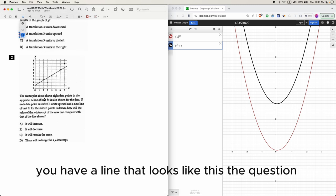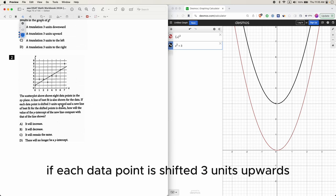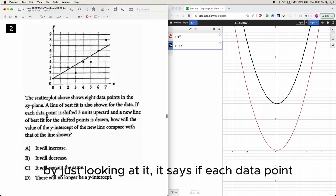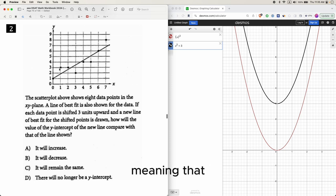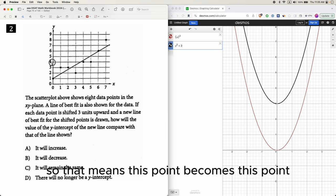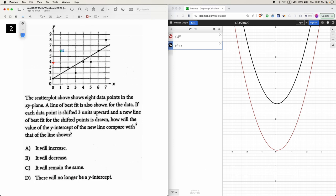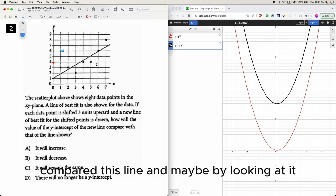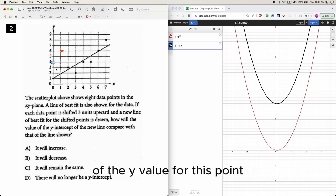You have a line that looks like this. The question says, if each data point is shifted three units upwards. So this one you can't use the calculator, but hopefully it's straightforward enough to solve it by just looking at it. You have this line, and this line is the best fit line. Meaning that if you want to approximate all the points here, then this line is the best approximation for all the points. If each data point is shifted three units upwards, so that means this point becomes this point. How will the value of the y-intercept of the new line compare with the line shown? And maybe by looking at it, you'll see that the value of the y-value for this point goes up by approximately three units. In fact, it should be three exactly, because if you're moving all the points up by exactly three, then the best line will go up exactly also by three. So it would increase exactly by three.